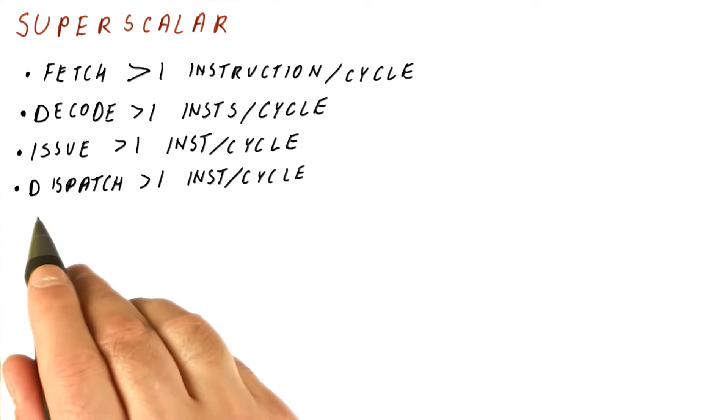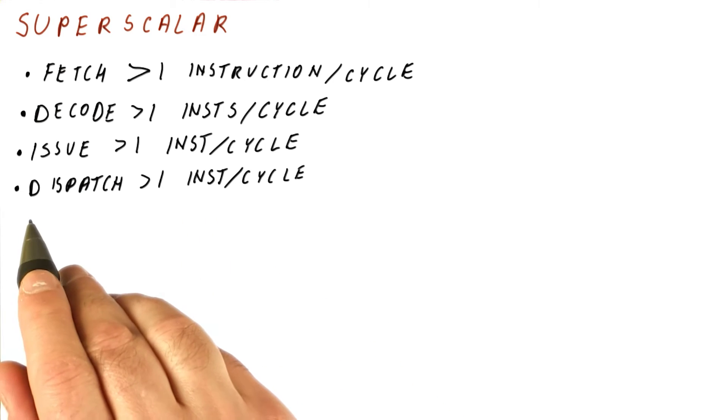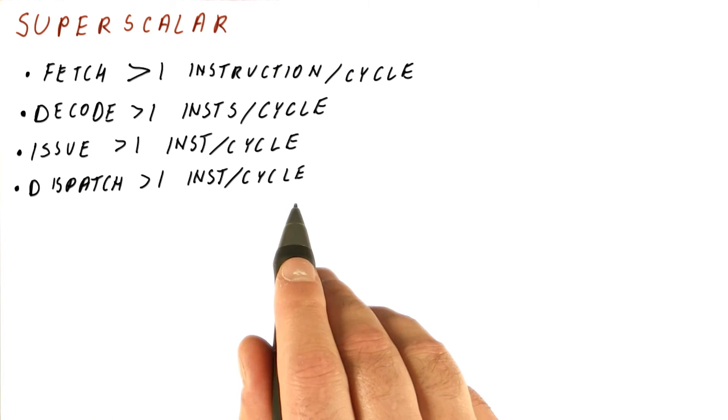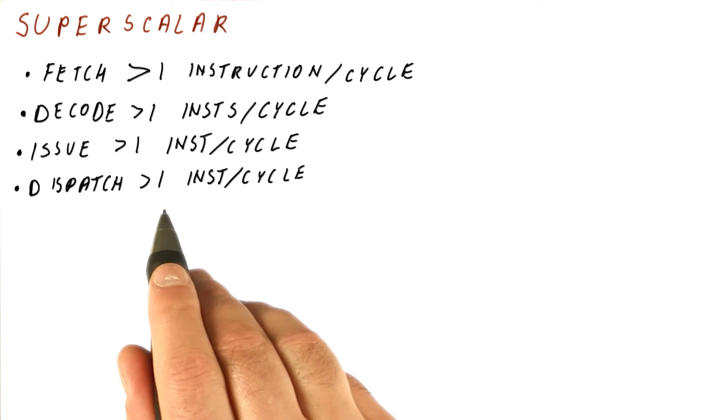We want to be able to dispatch more than one instruction per cycle. We have seen that if we have more than one execution unit, we actually can dispatch one instruction to each of the units. Effectively, we will already be able to dispatch more than one instruction per cycle.